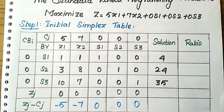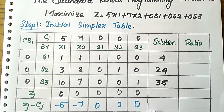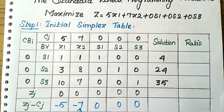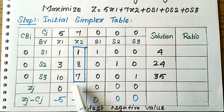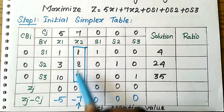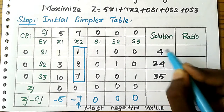To find the entering variable, we select the most negative value from the Zj − Cj row. Here, −7 is the most negative value, so that column is our pivot column and x2 is our entering variable.